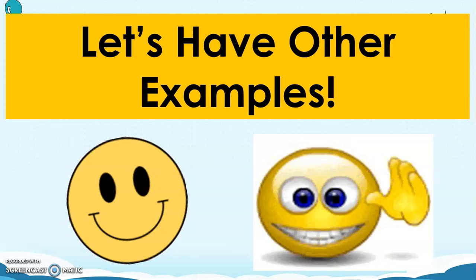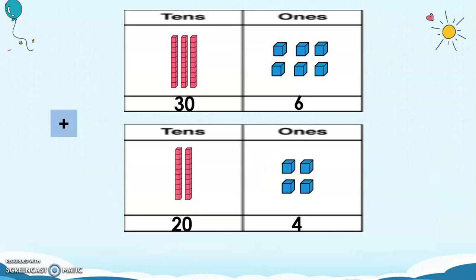Now, let's have another example. So we have here 36 plus 24. We have here 3 rods and 6 units and then 20 or 2 rods and 4 units. So again, we're going to add the ones first. So 6 plus 4, we have 10.